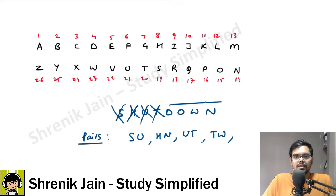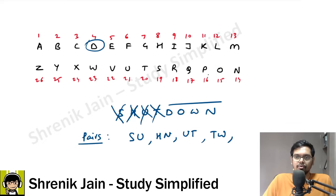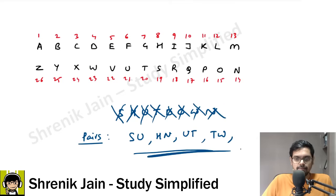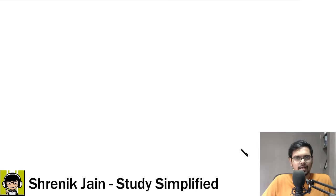Starting with D: D-O, D-W, and D-N are all way apart — no pairs. What about O-W? Way apart. O-N: zero elements in between in the word, whereas one element in the alphabet — condition not satisfied. W-N: way apart. Therefore we have only four pairs total — S-U, H-N, U-T, and T-W. That is our final answer. Answer is option C. I hope you understood the solution — not that tough.